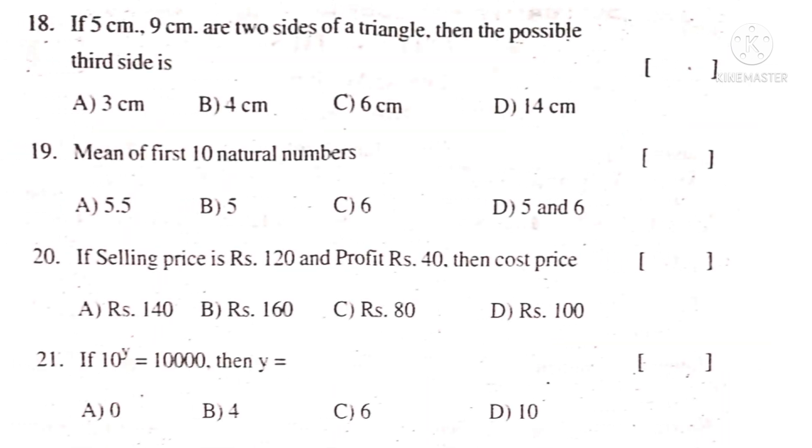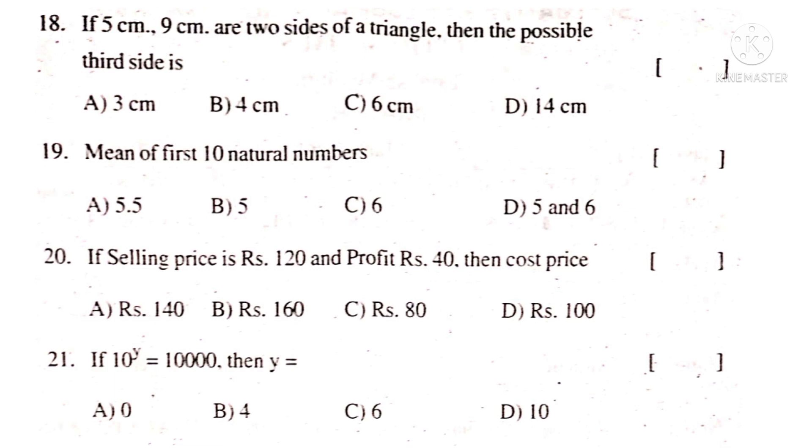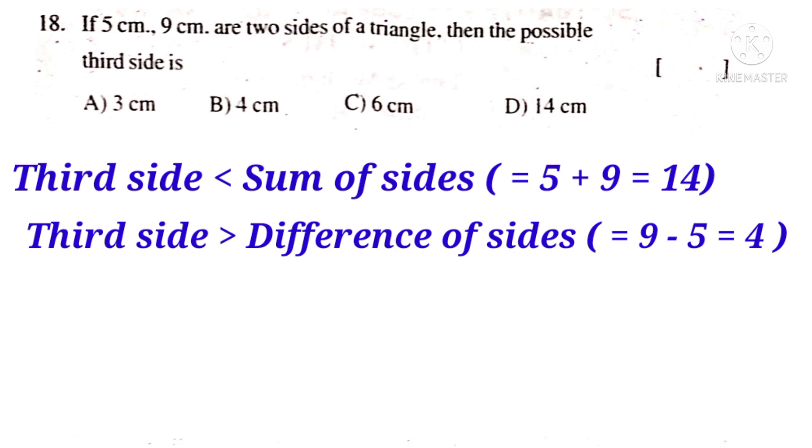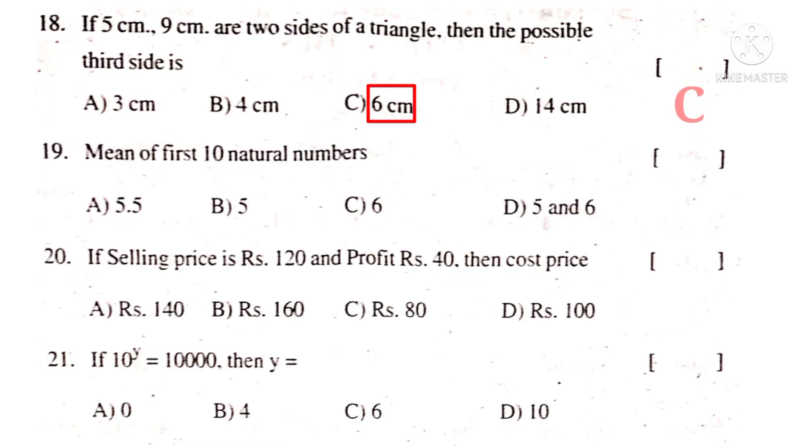Now 18th bit. If 5 centimeters, 9 centimeters are two sides of a triangle, then the possible third side is, third side must be less than sum of the remaining sides, that is 5 plus 9 is equal to 14. And third side must be greater than the difference of the sides, that is 9 minus 5 equal to 4. So here, third side lies between 4 and 14. So the possible length of the third side is 6 centimeters. So the correct choice is C.